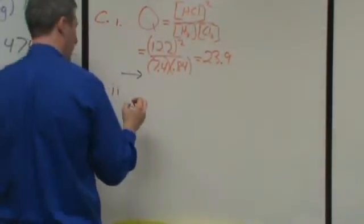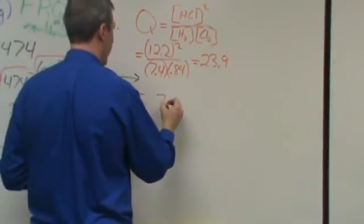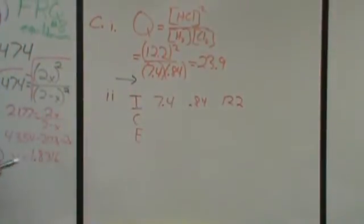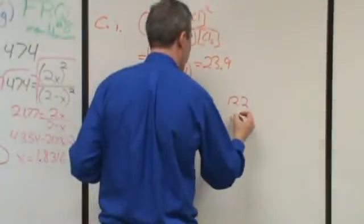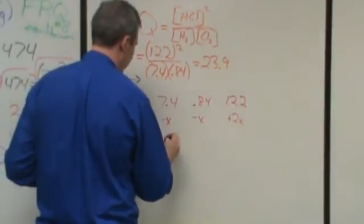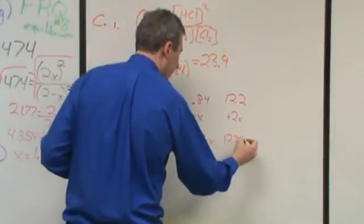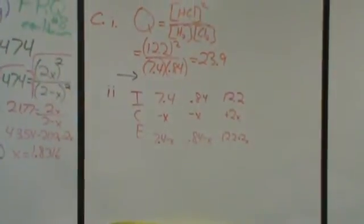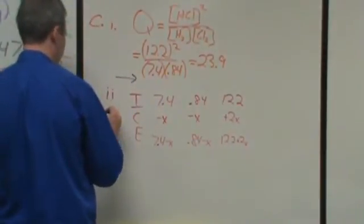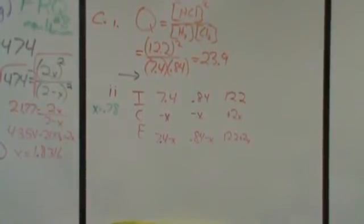Now, what I then want to do is I want to apply that for an ice chart. So in part two, I'm doing my ice chart again, but this time I can plug in my initials here. So I have 7.4, 0.84, and 12.2. But now I'm going to shift, and now I'm shifting to the right, so I'm increasing my amount of product. So I'm still going to go with a plus 2x, a minus x, and a minus x. Now, this sets up a math problem that really I didn't want to solve. So I kind of cheated a little bit and used the calculator, and just kind of iterated until I got a reasonable answer. When I ended up solving for x, I ended up with 0.78 as working decently well.